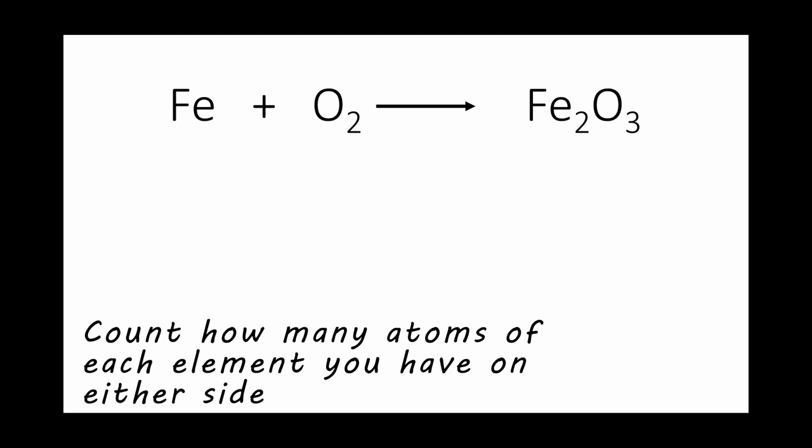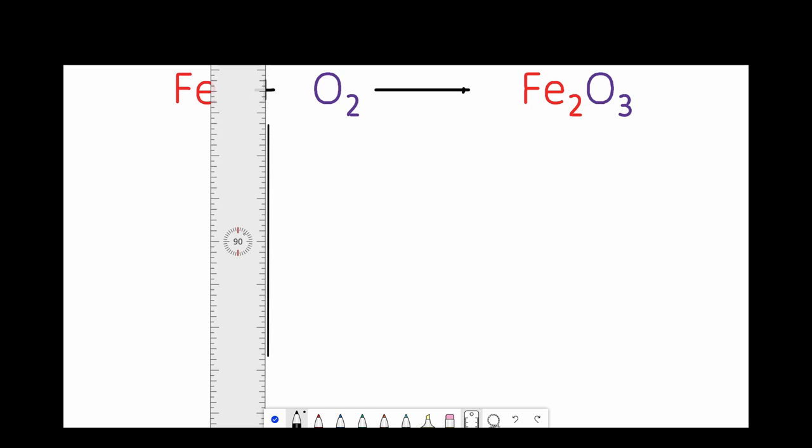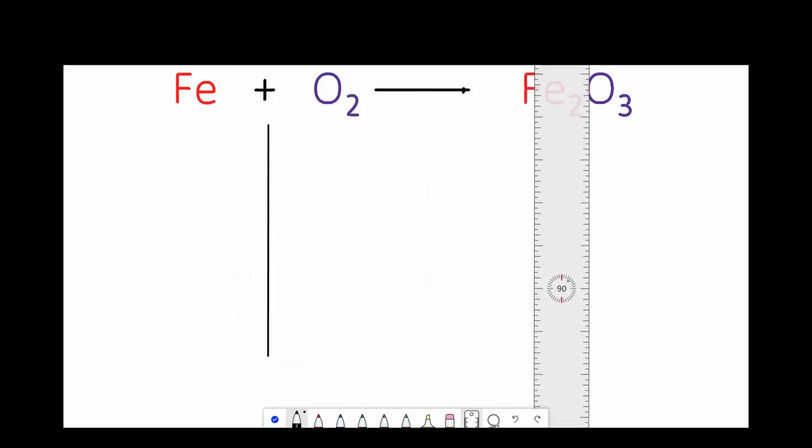So first draw a straight line like so on either side. This is just to separate the number from the element name so we don't get confused. Is that an O or is that a zero? Just draw the line, it's easier.